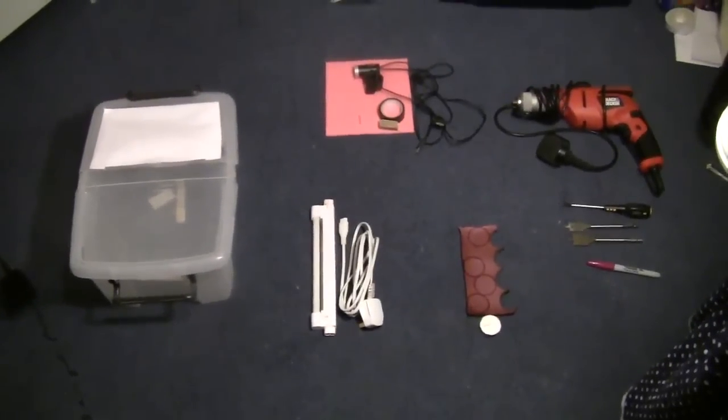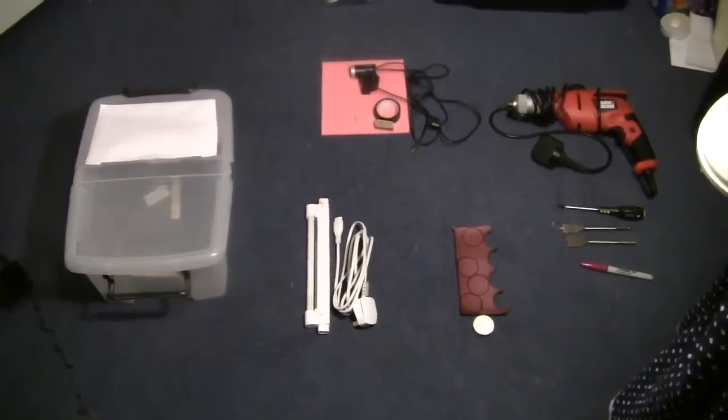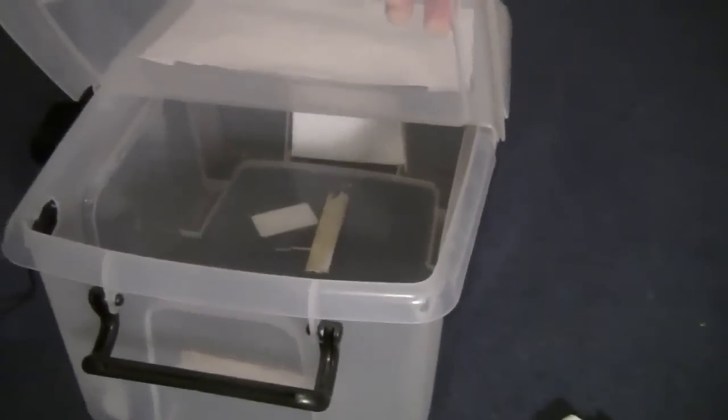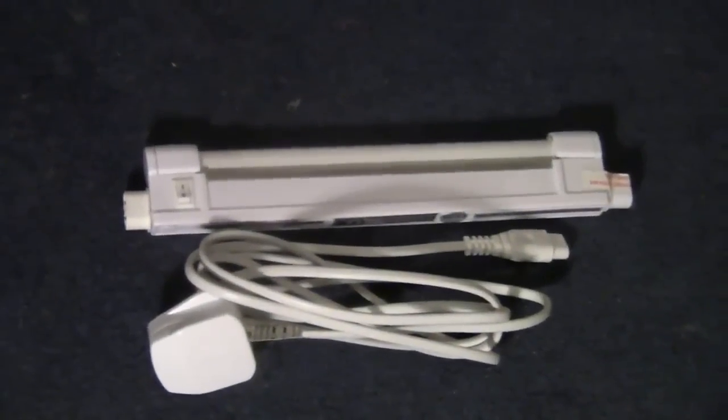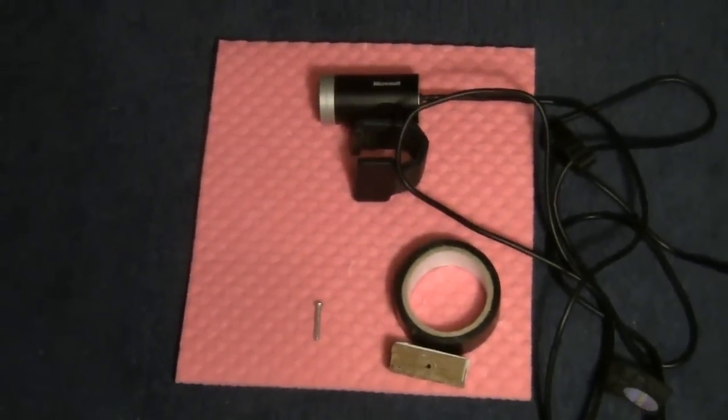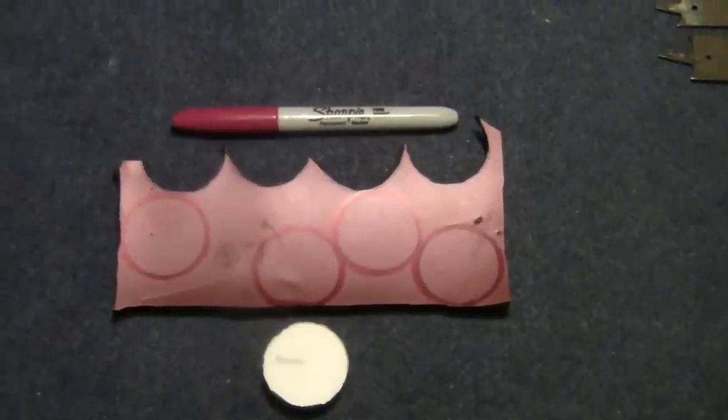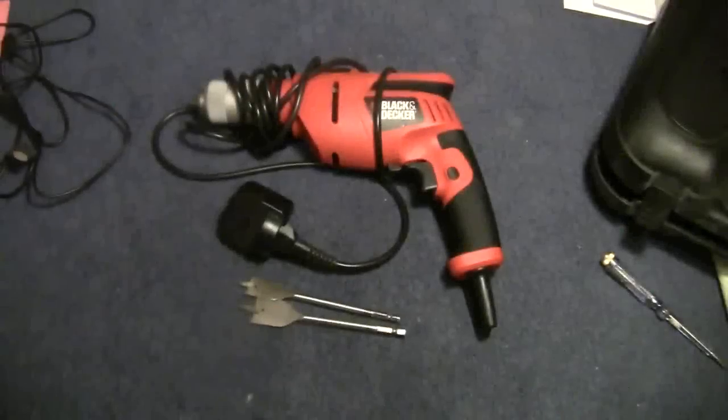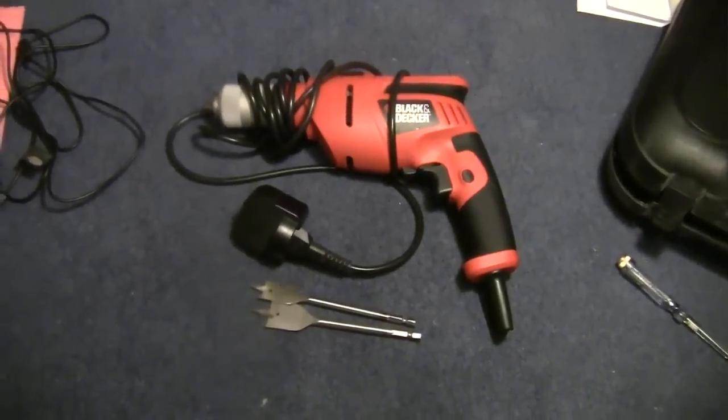Here are the required materials to make a trainer box: a 12-litre plastic storage box, a fluorescent light, high-definition web camera, a piece of neoprene, and an electric drill machine with drilling bits.